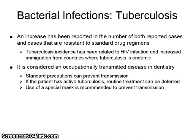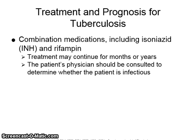Standard precautions can prevent transmission. If the patient has active tuberculosis, routine treatment can be deferred. Use of a special mask is recommended to prevent transmission. Combination medications including isoniazid (INH) and rifampin are prescribed for the treatment of tuberculosis. The treatment may continue for months or even years. The patient's physician should be consulted to determine whether the patient is infectious.